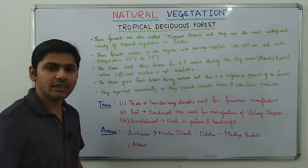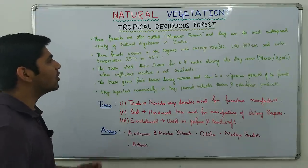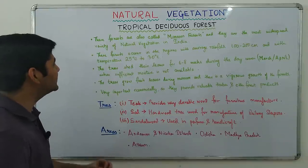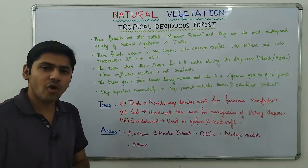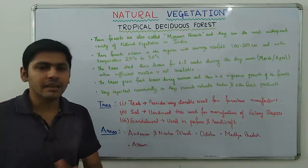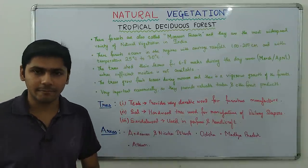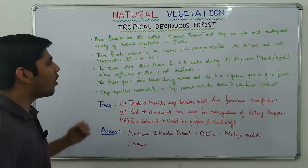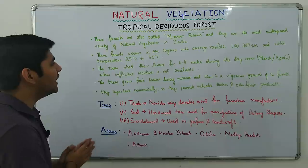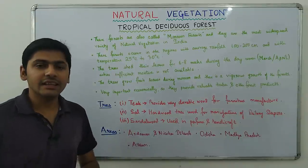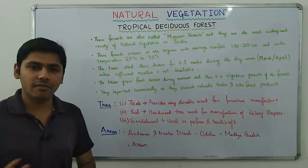Moving on to Tropical Deciduous Forest, also called Monsoon Forest. This is the most widespread variety of natural vegetation in India. These forests occur in regions with average rainfall of 100 to 200 centimeters and temperature of 25 to 30 degree Celsius.